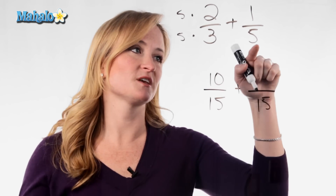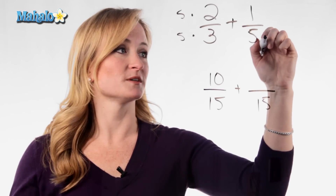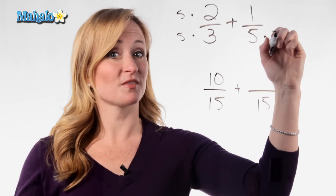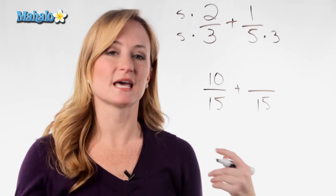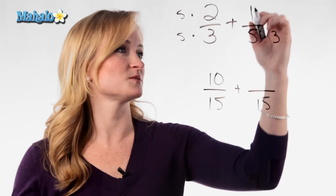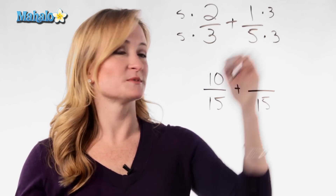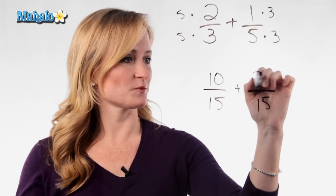Let's do the other side. How did this 5 become a 15? We multiplied it by 3. And again, what you do to the bottom, you must do to the top. 1 times 3 is 3.